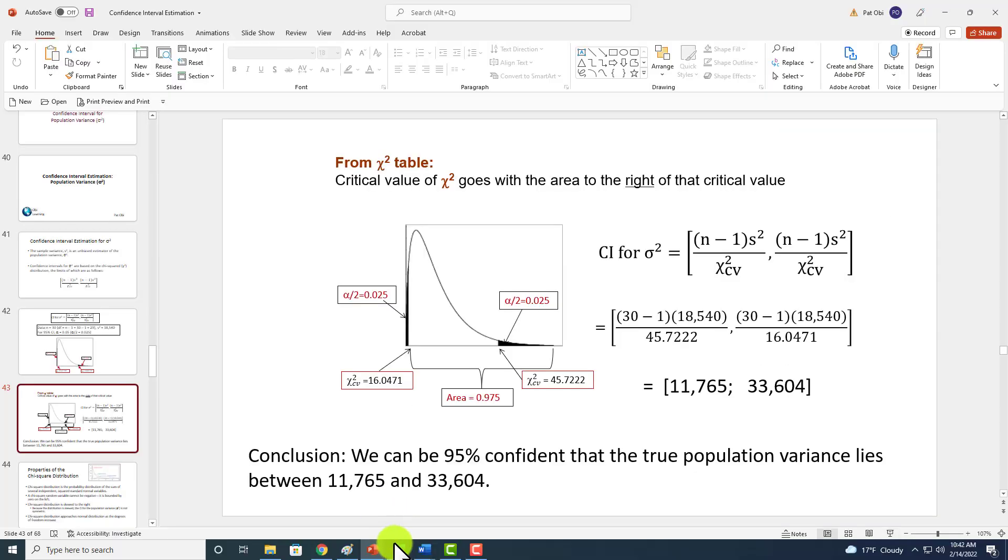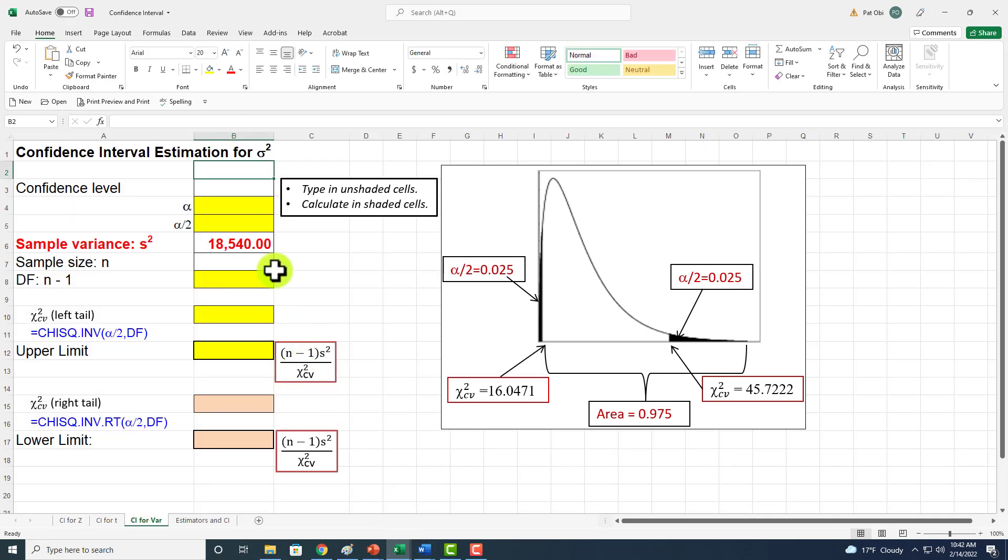Better yet, let's hook this up with Excel functions. I've set this up, this is my canvas. The instruction here is to type in unshaded cells and calculate in the shaded cells. For my confidence level, I type 95%. For alpha, I calculate that to be 1 minus 95%. For alpha over 2, that's alpha divided by 2. My given variance is 18,540, sample size is 30, and degrees of freedom calculated would be sample size less 1.